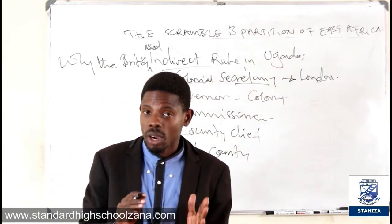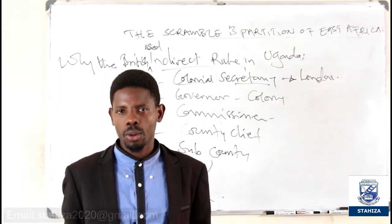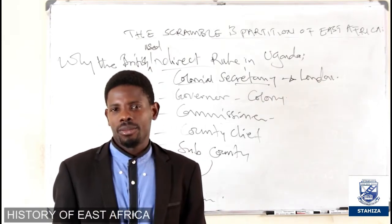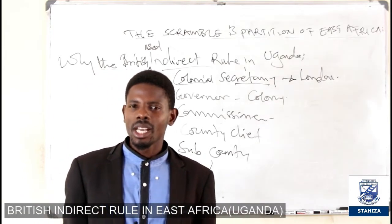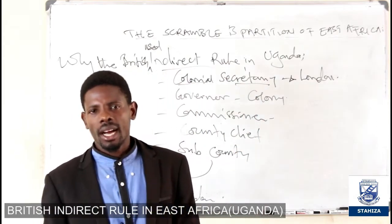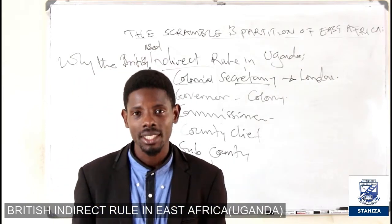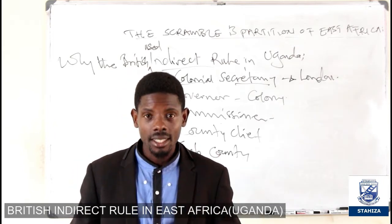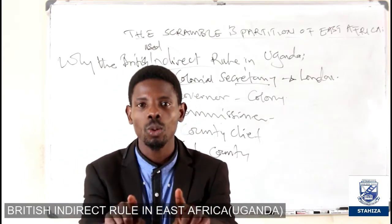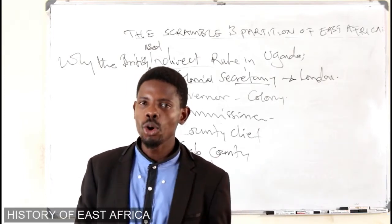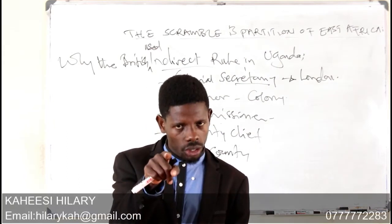You may already know that indirect rule is where you give orders through someone else. For example, I come to your class and tell the class monitor to tell all members to collect their books for marking. The class monitor tells the assistant class monitor, who tells the class counselor, who then tells the students. That is indirect rule — I did not go directly to tell you to collect your books. I used a chain to make sure the information reached the target.